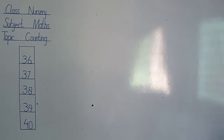How do you write 40? First you will write 4, then 0. This is 40. This is 40. Okay, today this is your assignment. You write the 36 to 40 counting in your notebook.